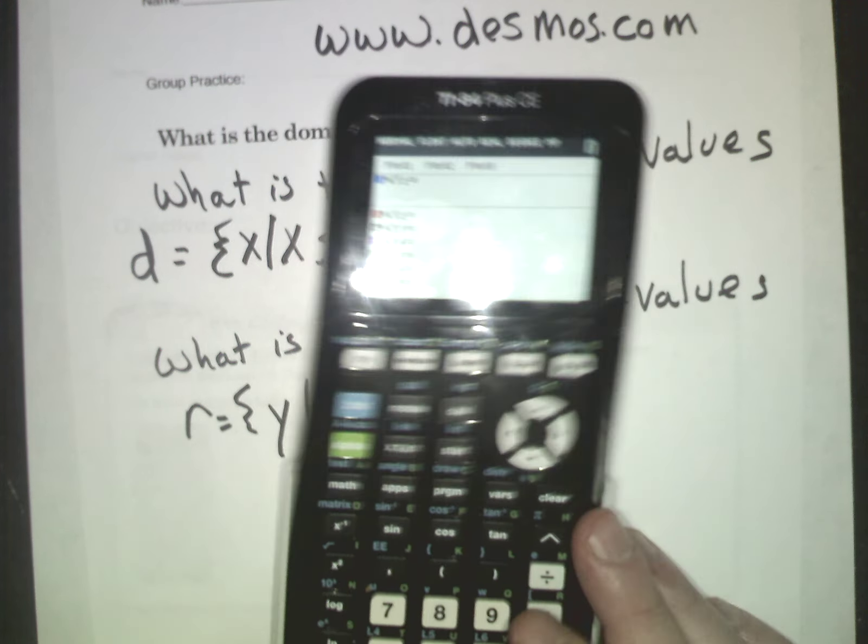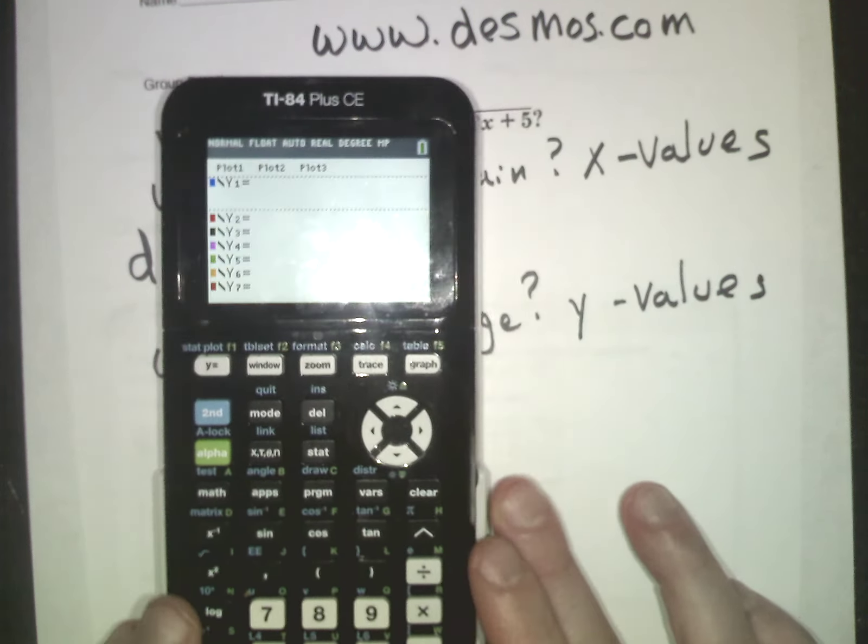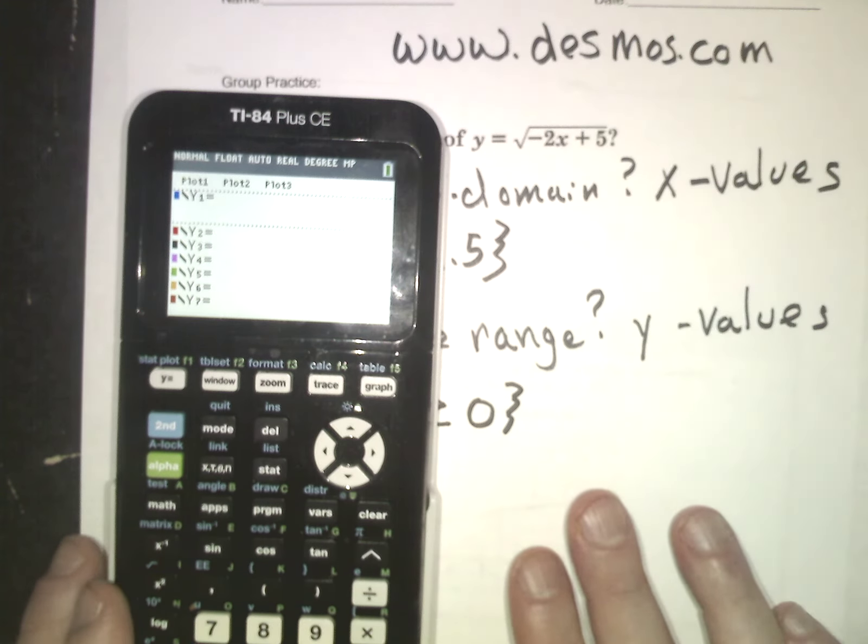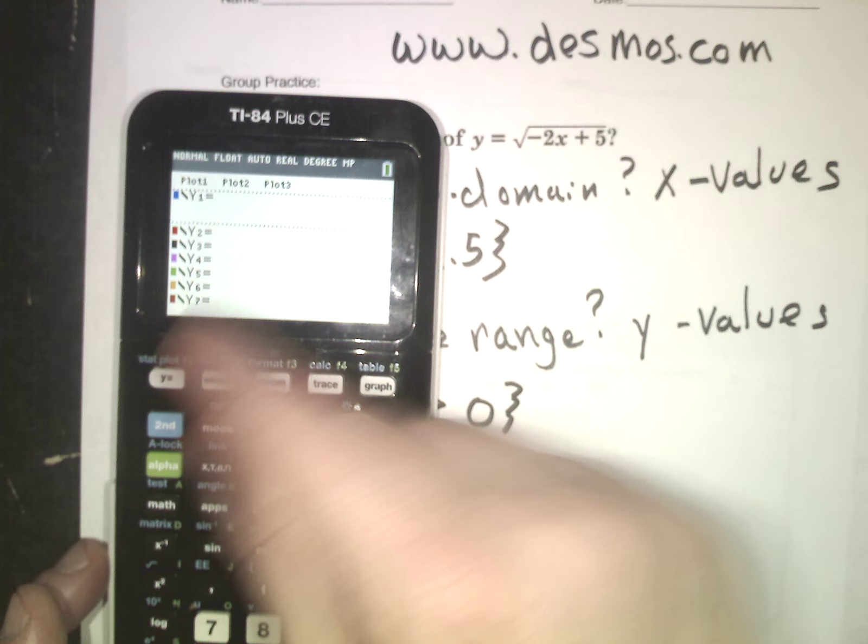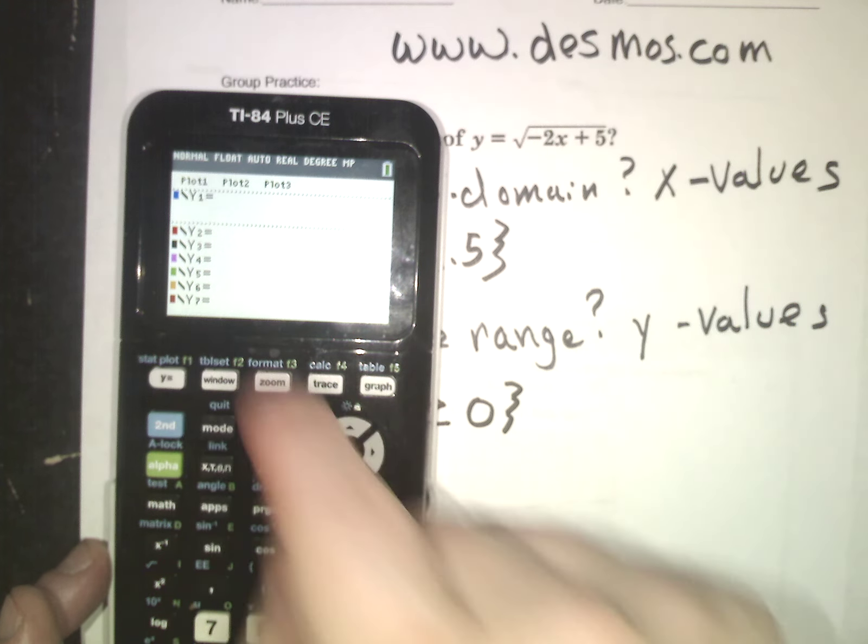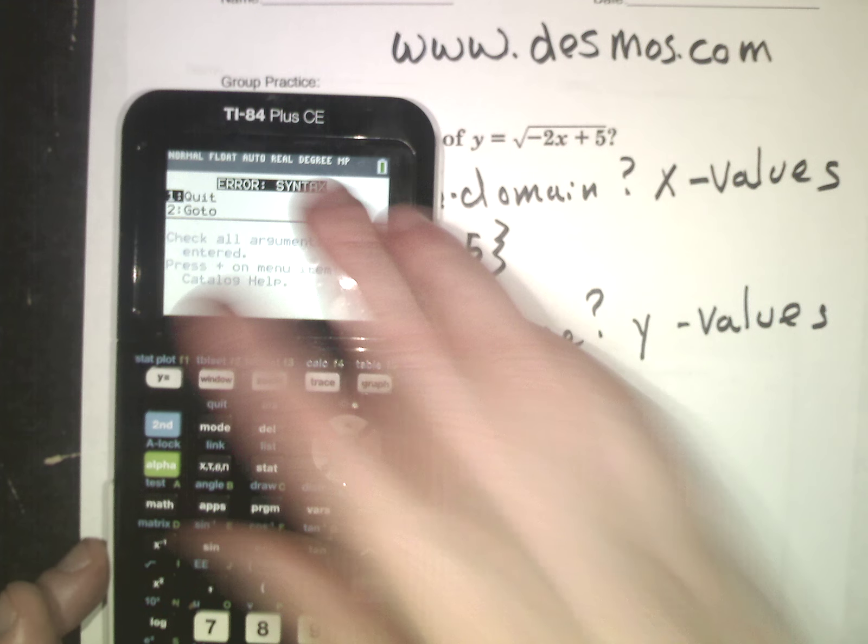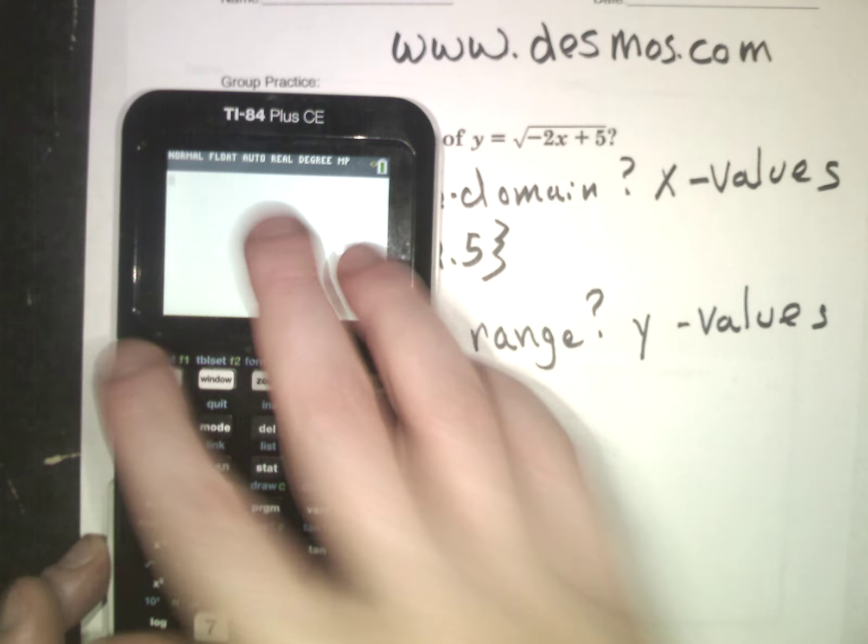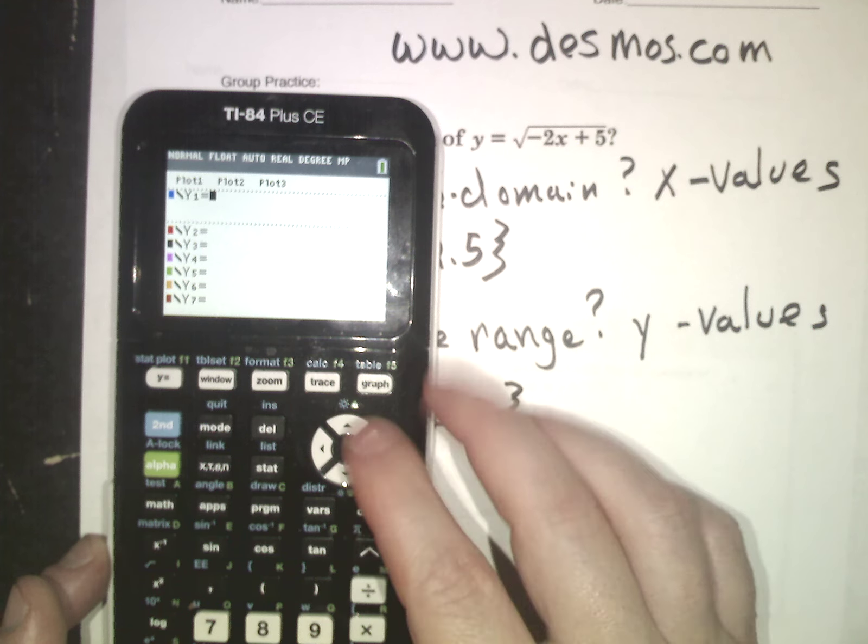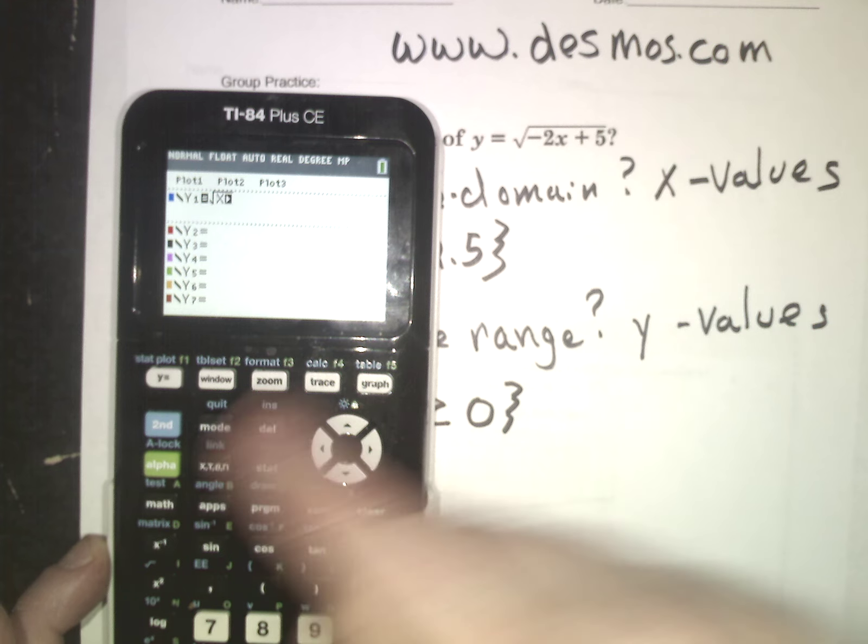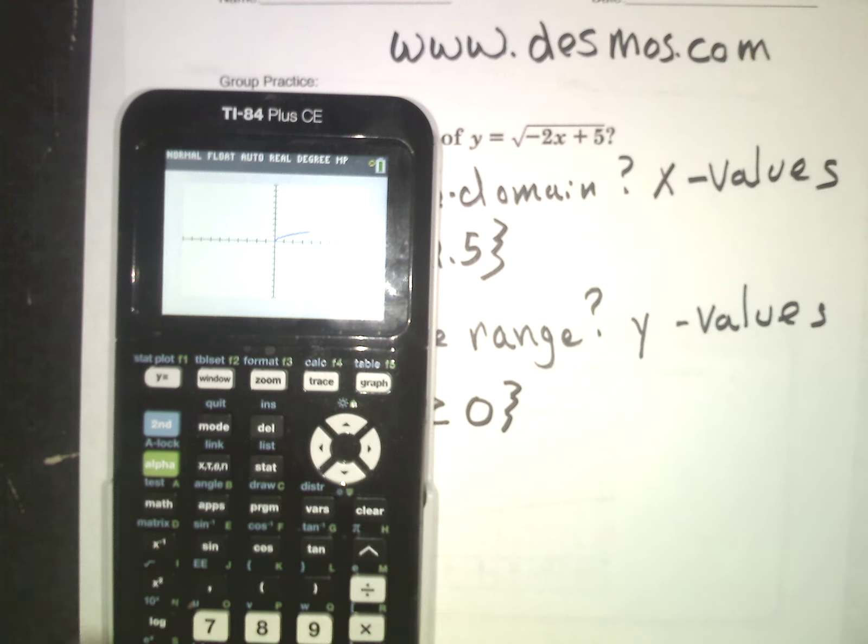I'm going to look at the parent function. If you remember, the parent function is the one without any numbers next to it, any constants. So I would just say second square root of x and I graphed out that little sucker. There's what it looks like.